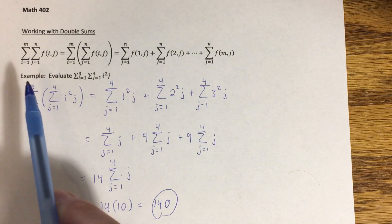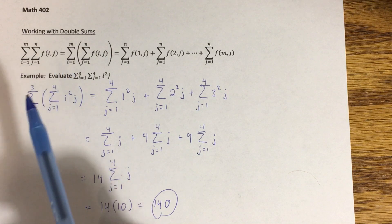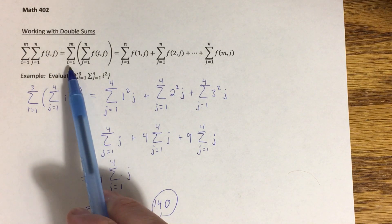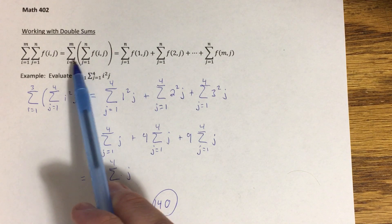What it means to evaluate a double sum is essentially this: if we were to wrap the innermost sum in parentheses, then we actually deal with the sum that's outside the parentheses first in a certain sense.